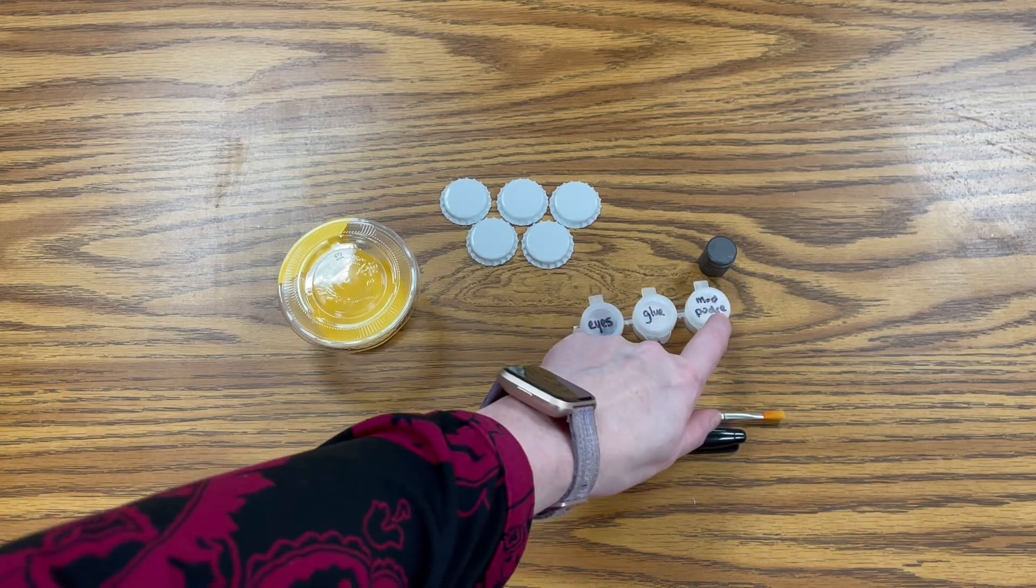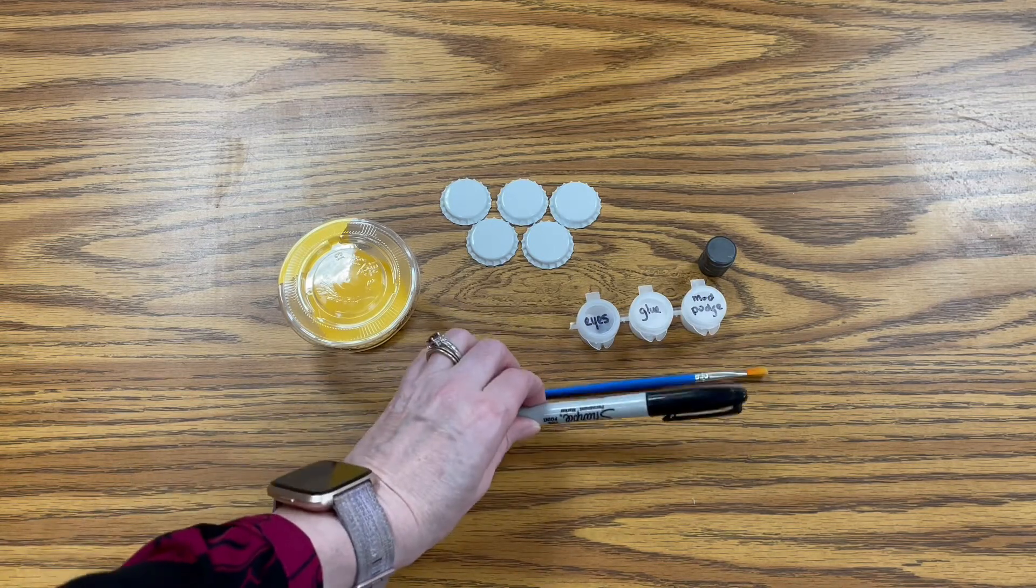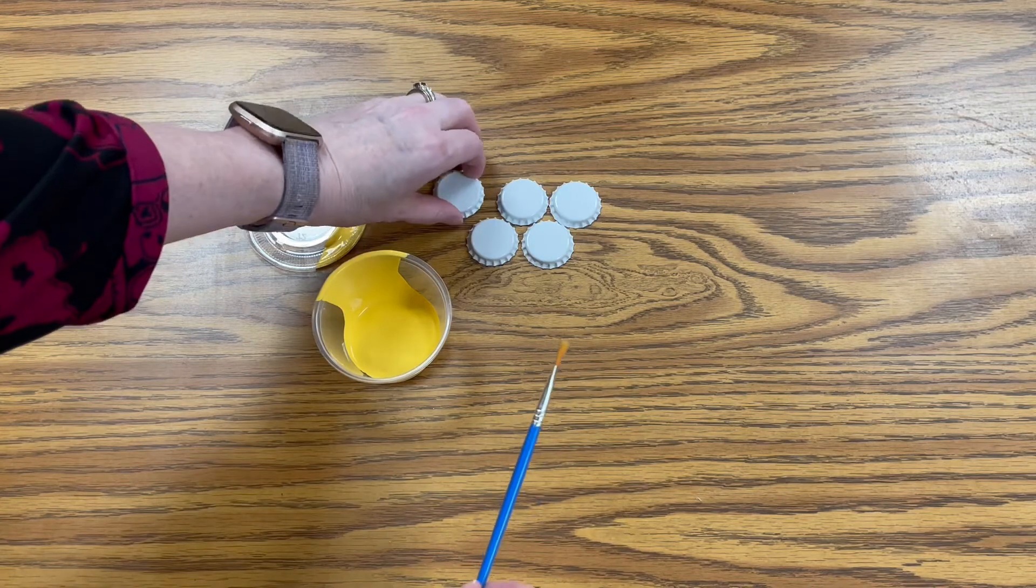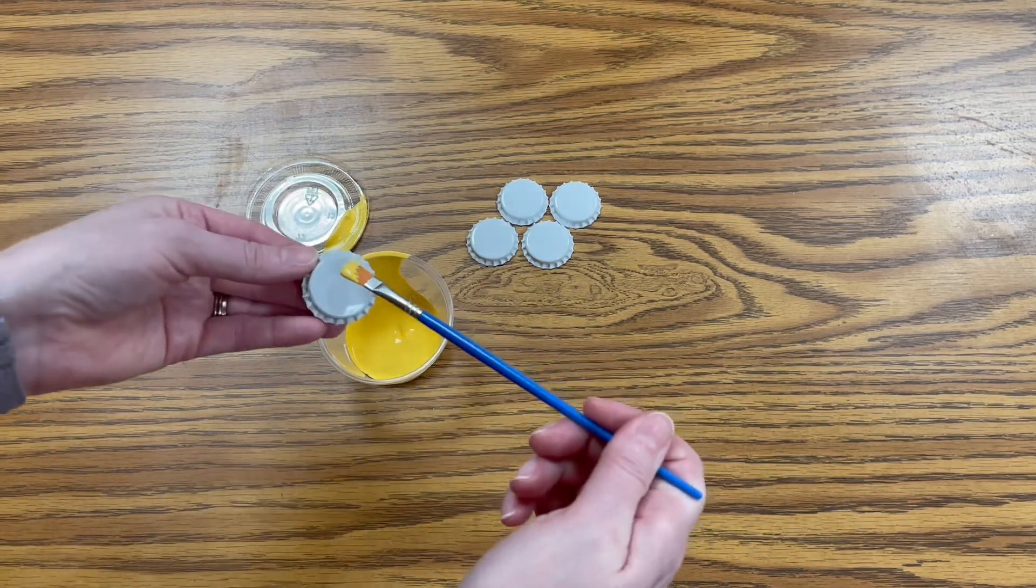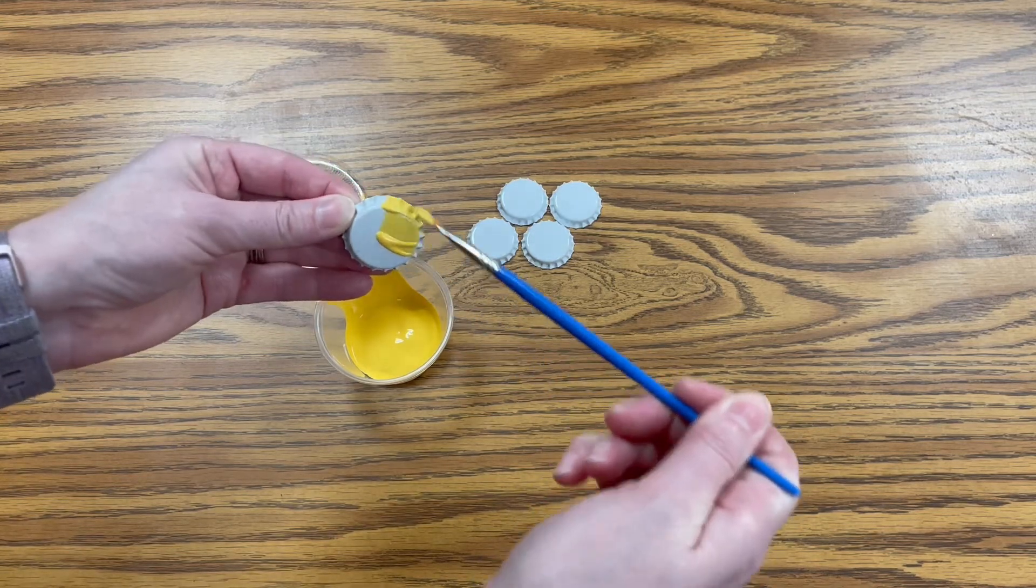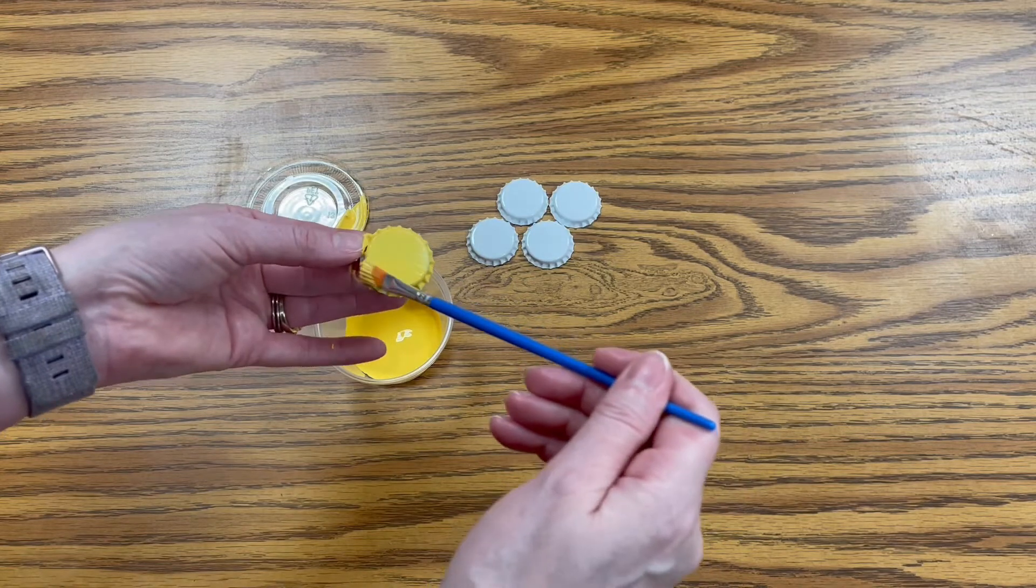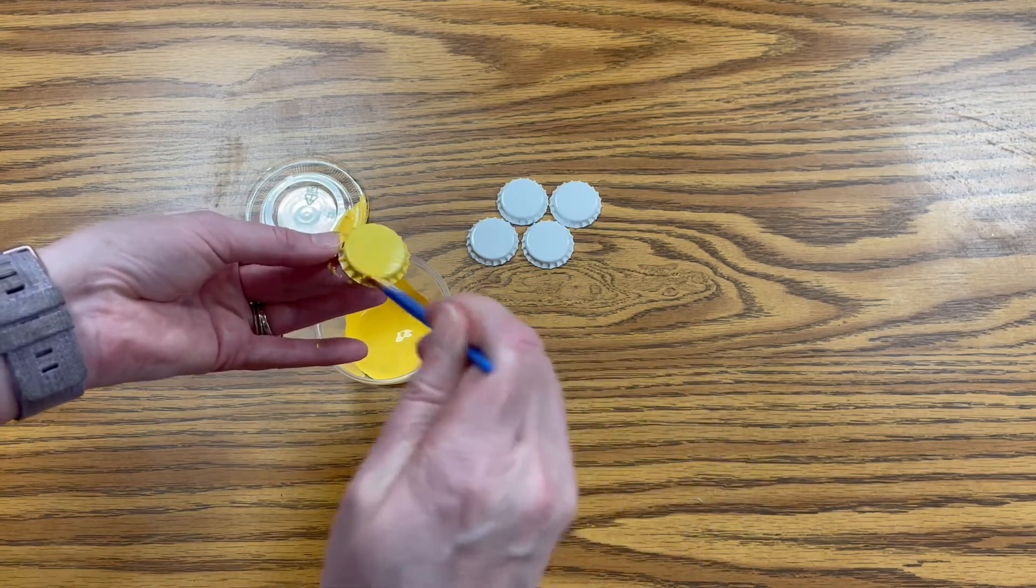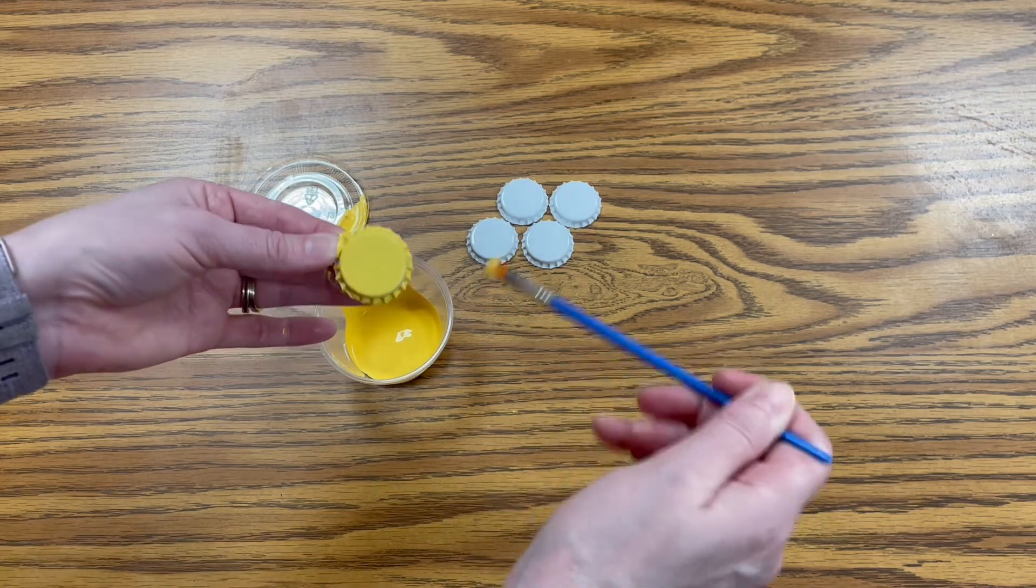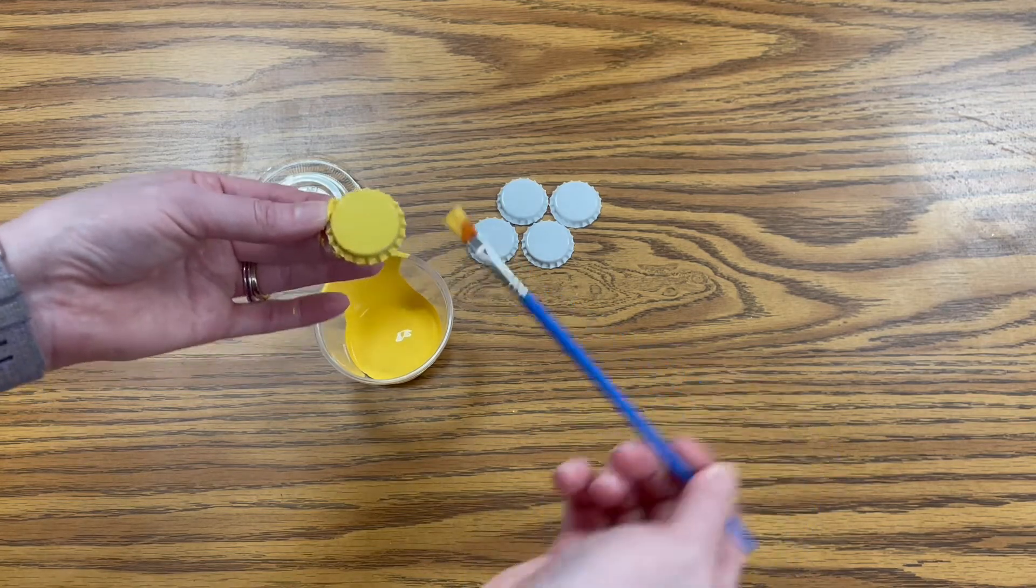You'll also need glue and mod podge, and then your paintbrush and your sharpie. So first what you want to do is take your bottle cap and your paint, and we're going to paint the bottle caps yellow. You can do however many layers that you want depending on the color yellow that you like. Paint each of the five bottle caps yellow and then let them dry before we go on to the next step.